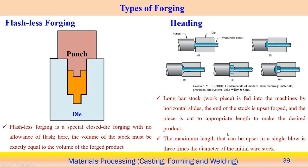One problem associated with forging is the creation of flash, which must later be removed. Flashless forging avoids this by placing the material inside the die and applying load through a punch, so no extra flash is created during the operation.